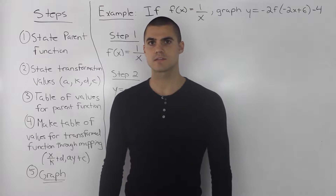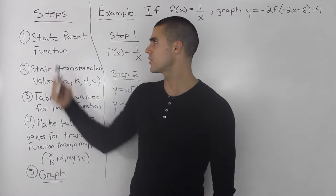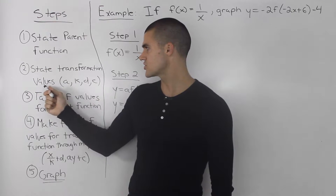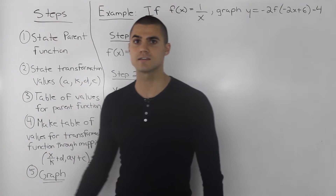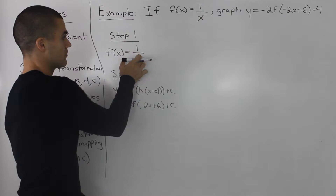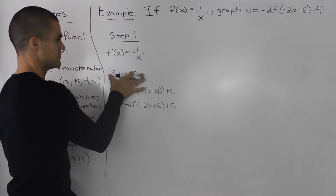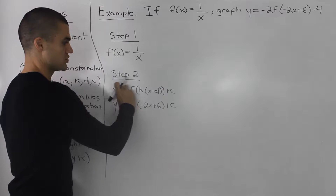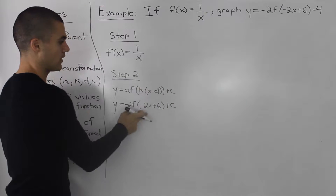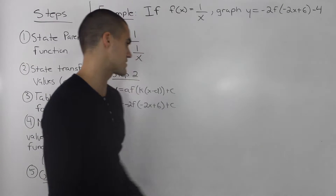Now let's get into the steps for graphing. Step 1, we have to state the parent function. Step 2, we have to state the transformation values a, k, d, and c. So right here I wrote out step 1 — the parent function is given, it's 1 over x. And then for step 2, I wrote out the general transformation format and right under it the transformations given in our specific question.